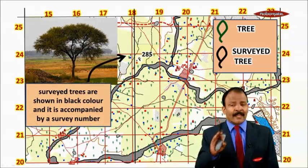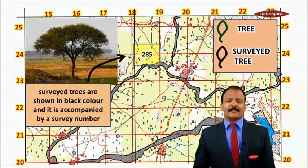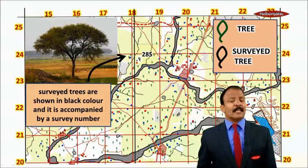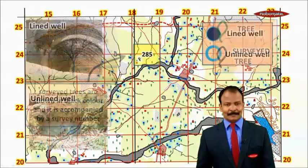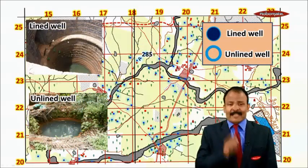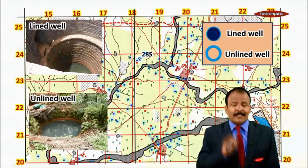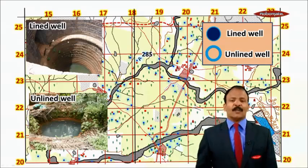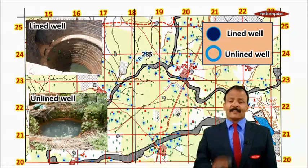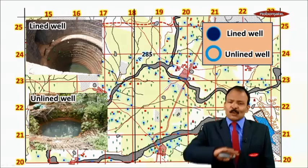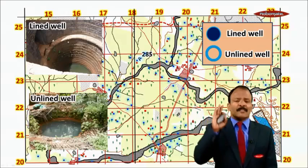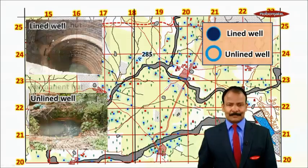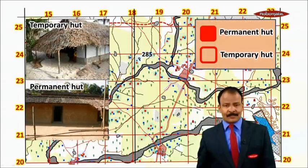Survey trees are shown in black color and accompanied by a survey number, for example number 285. There are two types of wells: lined and unlined. A lined well is a pukka well with masonry work, whereas an unlined well is just dug. In topo maps, most wells seen are lined wells; unlined wells are very rare.